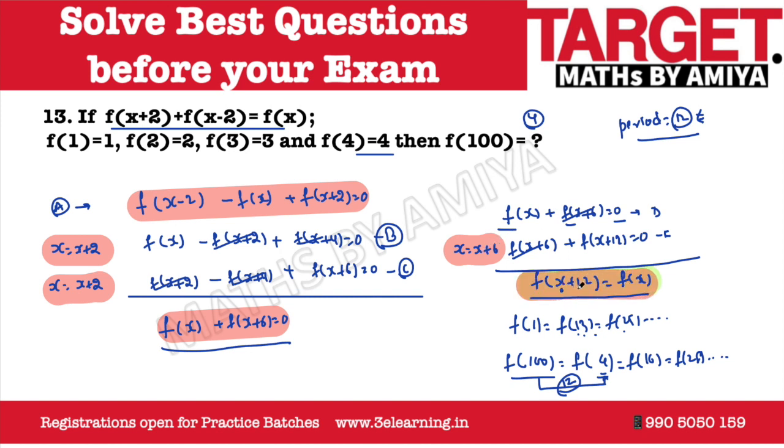Here the period is 12. That is the cyclicity is 12. We need to divide 100 by our period of the cyclicity, which one is actually equal to F4. So the answer of this question is 4.